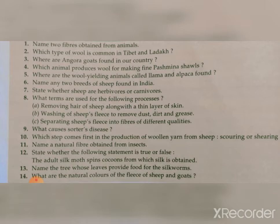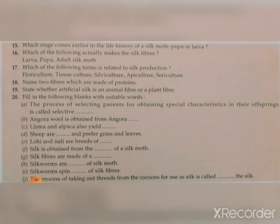Question thirteen: Name the tree whose leaves provide food for silkworms. That is mulberry leaves — in Hindi we call it shehtoot. Question fourteen: What are the natural colors of the fleece of sheep and goats? There are three natural colors — creamy white, black, and brown.